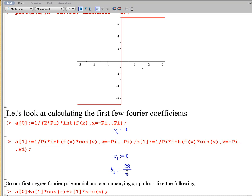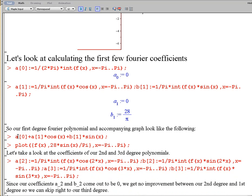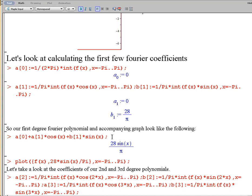So we can now do our first degree Fourier polynomial and see what it looks like. So our first degree Fourier polynomial will be a sub 0 plus a sub 1 times cosine of x plus b sub 1 times sine of x. Because of the 0s in a sub 1 and a sub 0, our polynomial only looks like 28 sine x over pi.